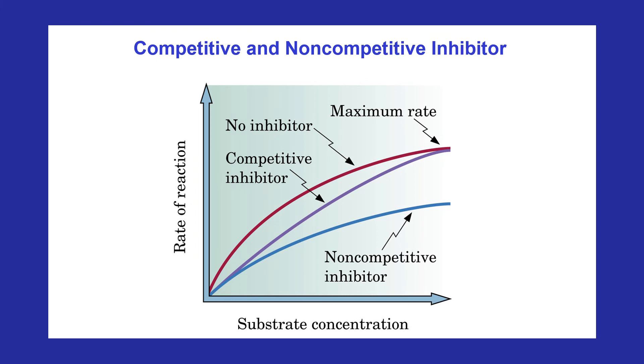In both cases, increasing the substrate concentration will increase the rate of reaction. But in case of competitive inhibition, the reaction rate will be comparatively higher than the non-competitive inhibition with the increase of substrate concentration. Because in competitive inhibition, increasing the substrate concentration displaces the inhibitor molecules directly from the active site.